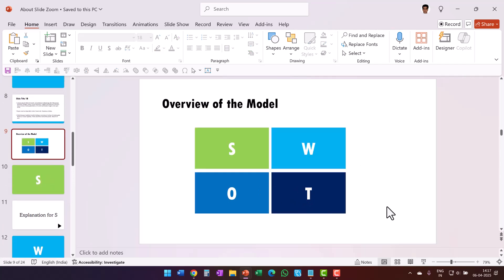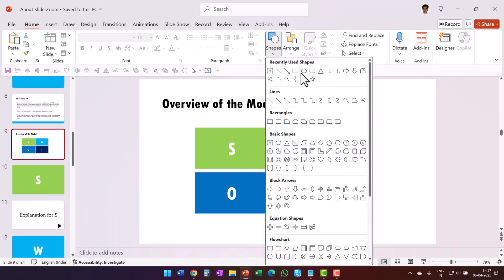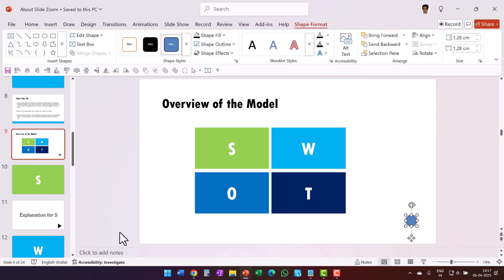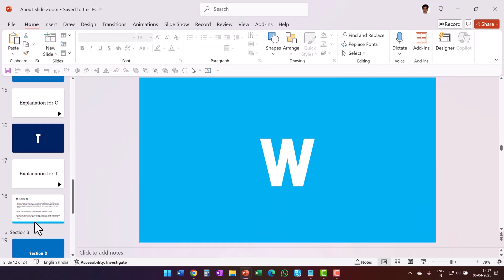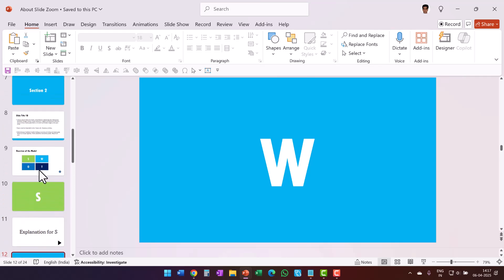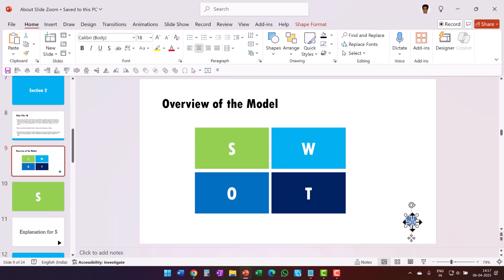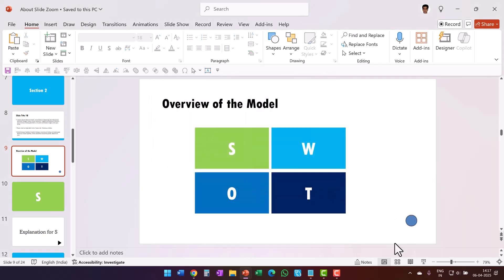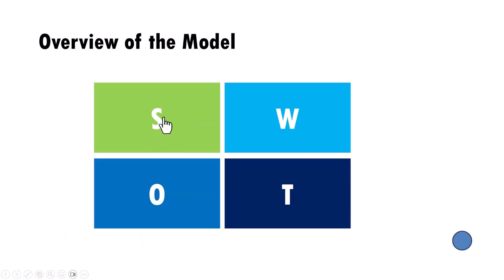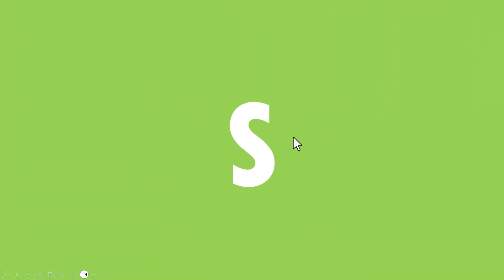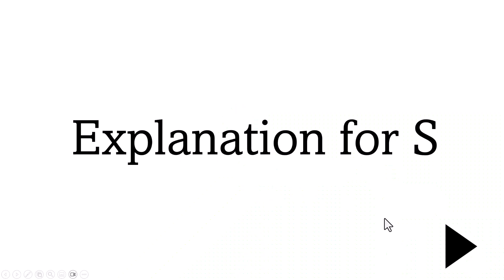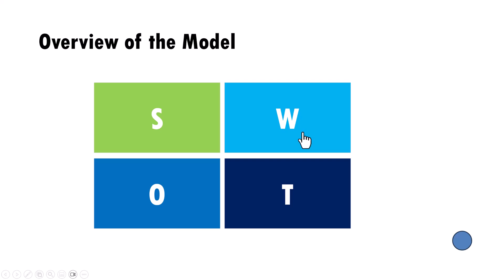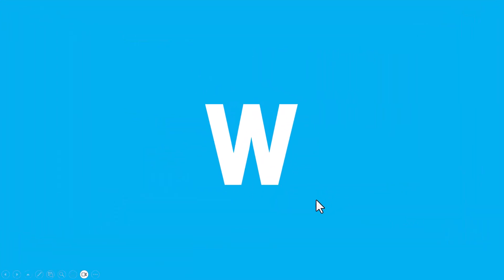Now when I click that shape in slideshow mode it takes me back to the orientation slide. I can select it, press Ctrl+C, and paste the same thing on each of the explanation slides. I can also create a small circle icon and connect it via Ctrl+K to slide 18, which is the slide continuation. So after explaining each character I can go back to the orientation slide for the model and keep presenting.